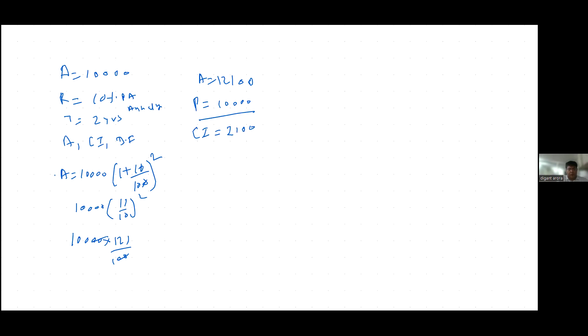The difference comes out to be that. Next question: again amount 10,000, rate of interest 10%, time period is 3 years, annually. Same way, principle 11 by 10 cube, so 10,000 times 1331 by 1000 equals 13,310. Amount minus principle 10,000 gives compound interest 3,310. Simple interest for 3 years is 3,000. Difference is 310.